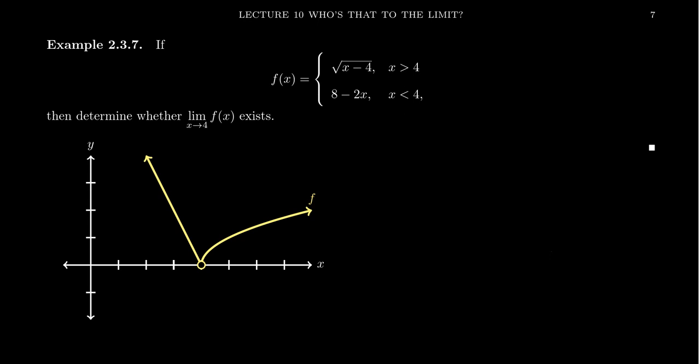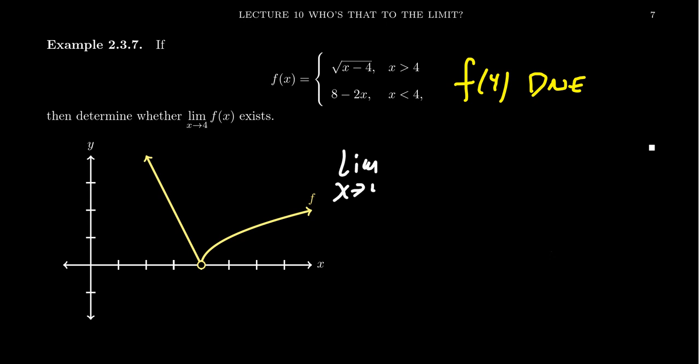You'll notice that f of 4 in this situation is undefined — it does not exist. The domain doesn't tell you what to do when x equals 4; we know what to do when x is greater than 4 or less than 4, but not when x equals 4 itself. We can still consider the limit in this situation. If we want to compute the limit as x approaches 4 of f of x, what's that going to equal?